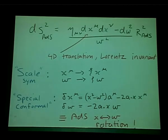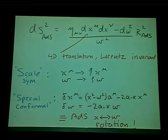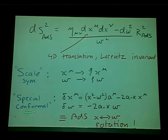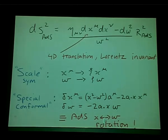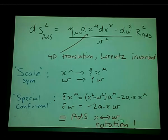The ADS metric has four-dimensional translation invariance, Lorentz invariance, scale symmetry, and special conformal transformations that correspond to rotating the illusory fifth direction into the usual four directions. There's a magical symmetry in quantum field theory that says the illusion and the real thing are rotatable into each other — we should not call it an illusion anymore but a duality. The extra dimension emerges from scale invariance.